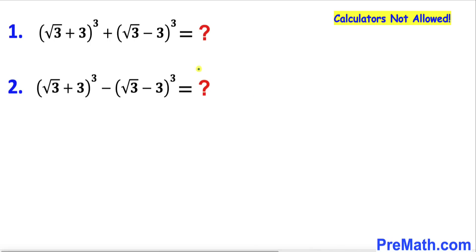Welcome to pre-math. In this video we have got these two radical problems and we are going to find the value. The first one is square root of 3 plus 3, whole to the power 3, plus square root of 3 minus 3, whole to the power 3, whereas the second question has a negative sign in between.